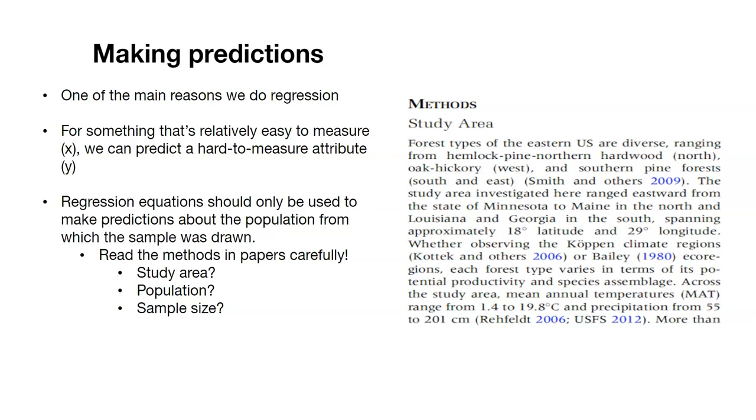The study area will often say something about where the data were collected, how the data were collected, what kind of quality assurance the data went through. It'll also say something about the population. It might say something about the sample size, how many trees were sampled, how many fish were weighed, depending on the variables that you're interested in.